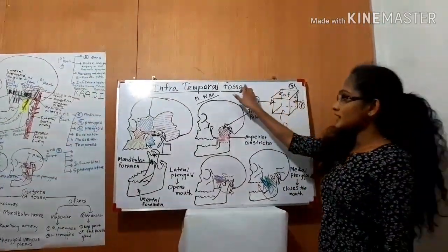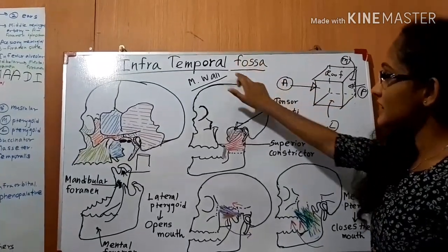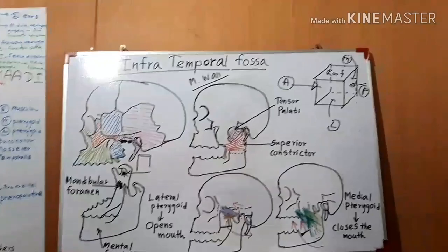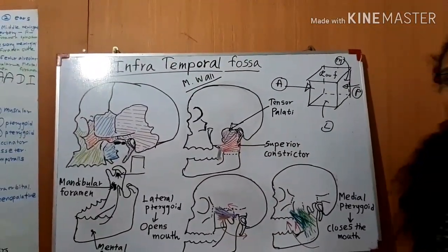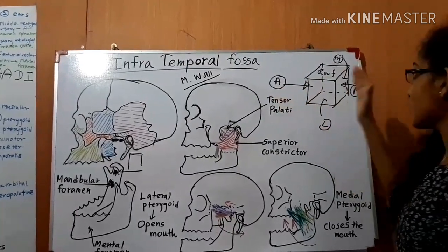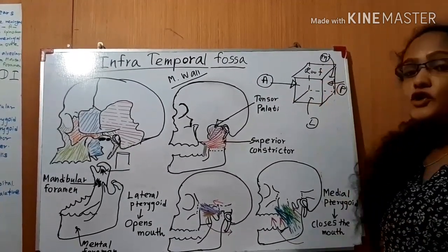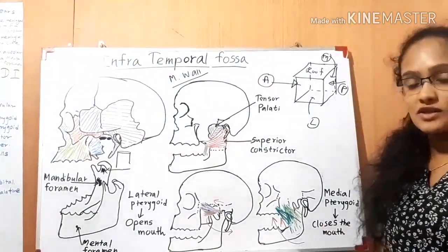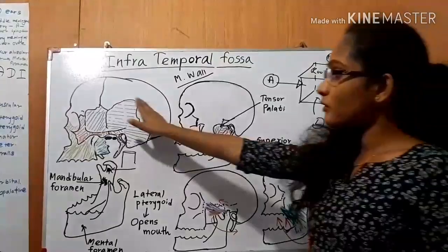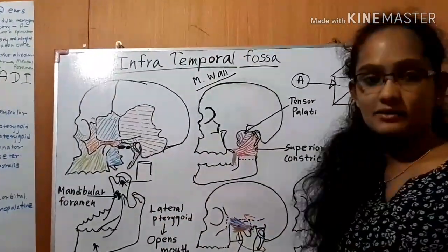If we consider the infratemporal fossa, as its name indicates, it is a cavity beneath the temporal bone. Although it has an irregular shape, it also has a roof, anterior surface, posterior surface, lateral surface, and a medial surface. To consider its three-dimensional structure, we need to know about some of the bones located in the temporal region of our skull.